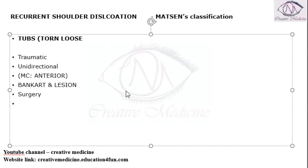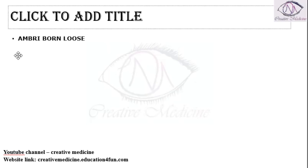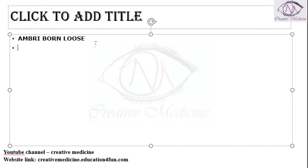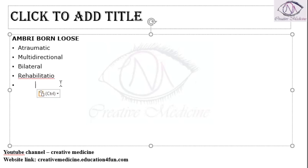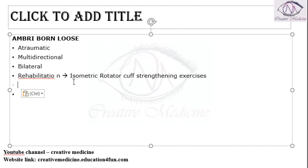The surgery performed is arthroscopic Bankart surgery and Hill-Sachs repair. The second part of the classification is AMBRI. Here, the dislocation can be atraumatic, or it can be multidirectional, or it is bilateral dislocation treated with rehabilitation. In rehabilitation, we give the patient isometric rotator cuff exercises and internal capsular closure.